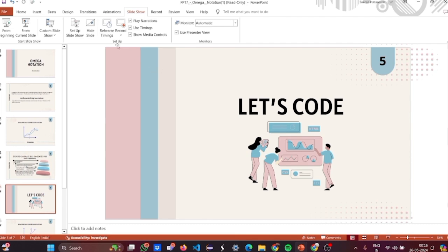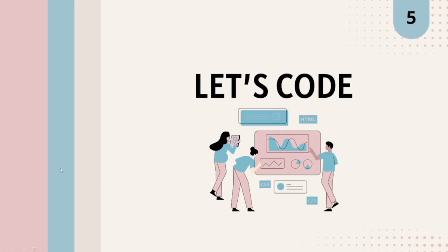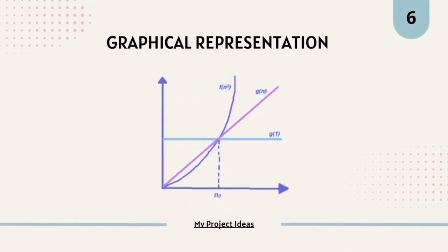That code showed the boundaries. Looking at the graphical representation, G of N lies between certain bounds — there is a linear line, a constant line, and a quadratic line, and for a certain value you can see the distinction.